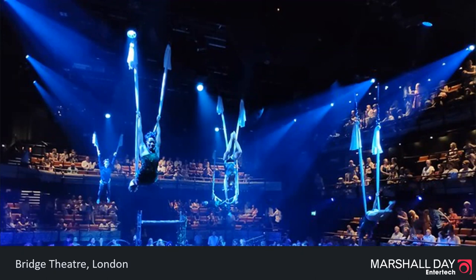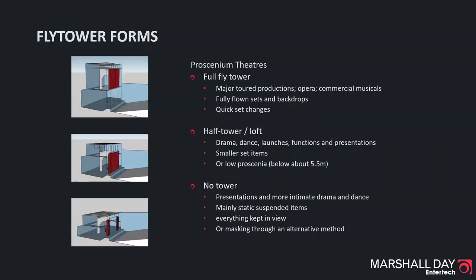This is from a production of A Midsummer Night's Dream at the Bridge Theatre in London. So to give you some idea of where different performances might sit — very broadly — opera, major touring productions, and commercial musicals will need a fly tower. If you're only doing drama or dance, depending on the complexity and scale of your shows, you might need one of the smaller loft options. The most intimate shows, where you might only need things hung statically, may not require any tower at all, and even without a tower you can achieve quite a lot with just temporary masking in some circumstances.